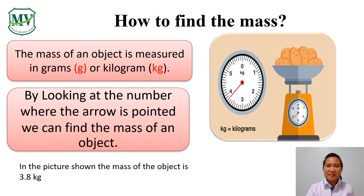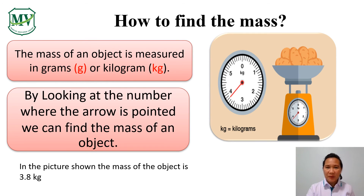How to find mass: the mass of an object is measured in grams or in kilograms. In the given example, by looking at the number where the arrow is pointed, we can find the mass of an object. In the picture shown, the mass of the object is 3.8 kilograms.